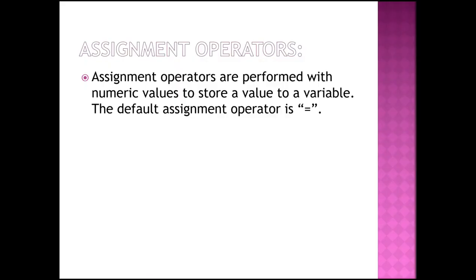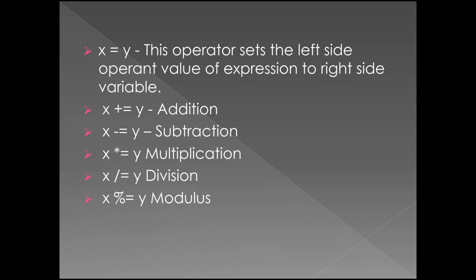The next one is assignment operators. Assignment operators are performed with numeric values to store a value to a variable. The default assignment operator is the equal to (=) symbol, used to assign a particular value to a particular variable. This sets the left side operand value of the expression to the right side variable. For example, x += y is equivalent to x = x + y.